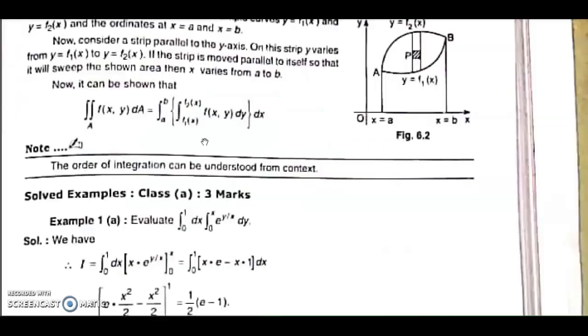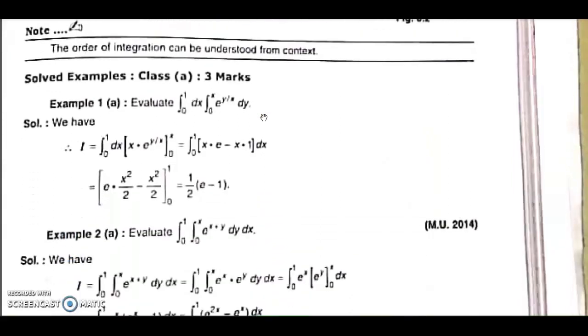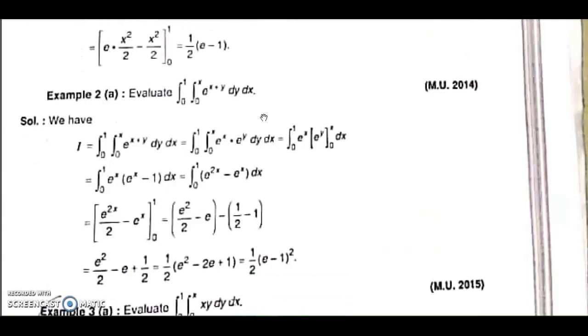In our first lecture, we have already seen which variable to start with and which variable to end with. I repeat: inner integral limits are the functions of x, then they are the limits of y. Similarly, if inner integral limits are functions of y, then they are the limits of x. Outer integral limits are always constants and they are the limits of the second variable. To elaborate this, we had some examples as well.